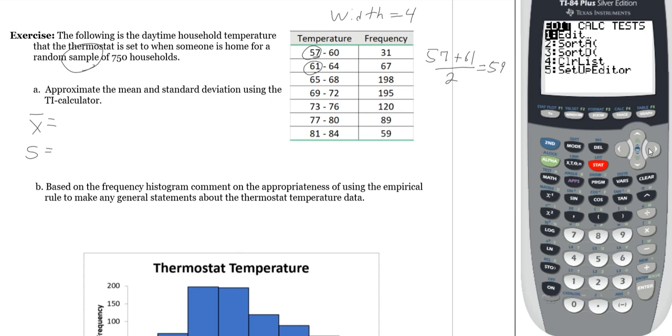But, let's go do that. Stat, calculate, 1-veristats. In this case, my list is L3. Notice that it kept the same stuff. So, if I don't want a frequency list, I would have to delete that out of there. My list is in L3 and my frequency list, I do have one. It is in L4. So, second, 4.